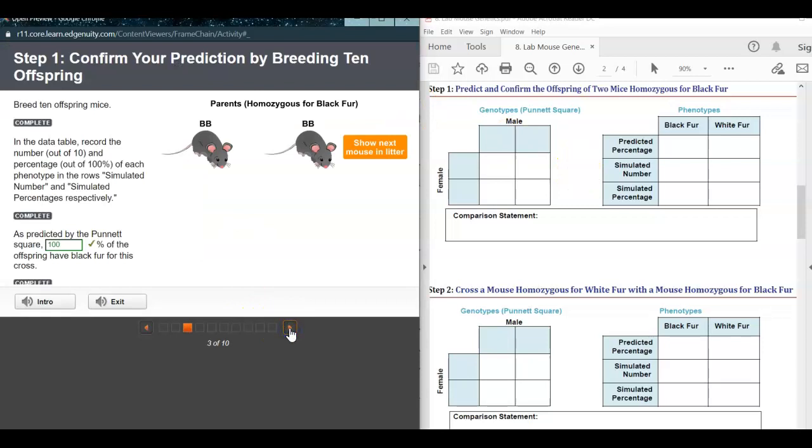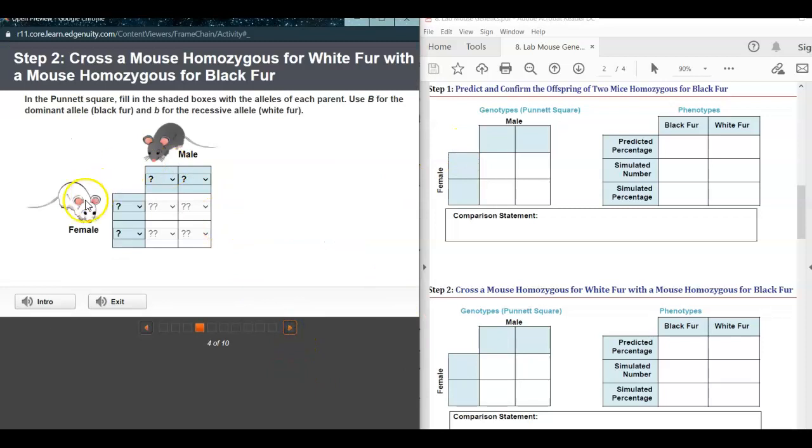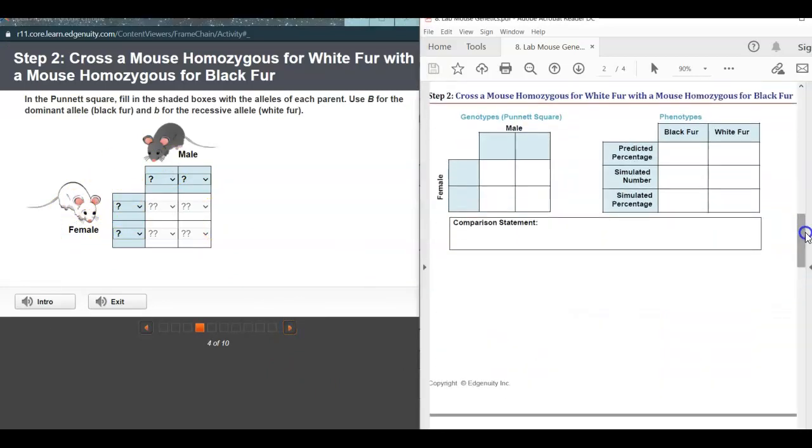When you go to the next screen, it will have you show what the baby mice look like. You're just going to click this 10 times until you get 10 offspring. That's what you'll write here for those phenotypes. Remember, the genotypes are the letters, and the phenotypes are what they actually look like. You'll continue through and write down the genotypes for these different mice.